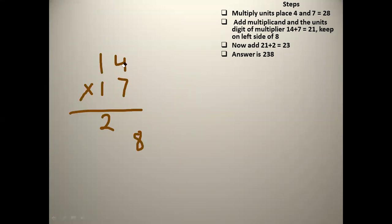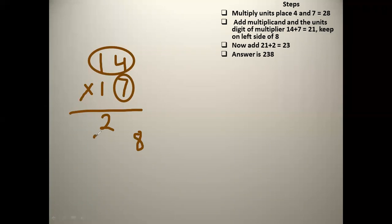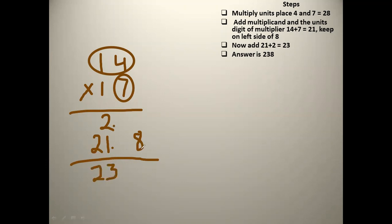The next step is we have to add the multiplicand, which is 14, and the units place of the multiplier, which is 7. So 14 plus 7 gives us 21. Then we add 21 plus 2, which is 23, and bring down the 8. So 238 is our answer. 14 times 17 equals 238. Let's see another example.